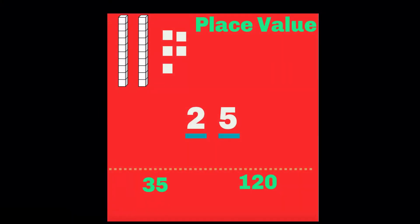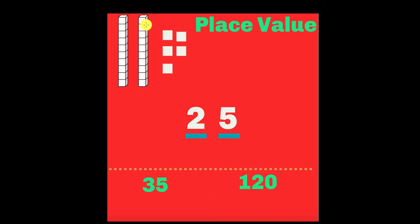Now if you have been watching my other videos you will know that we have already learned about tens and ones. So you know that this is a 10 stick and a 10 stick has 10 cubes or 10 squares in it. And this side is the ones — that's when you have the 10 stick broken down into pieces, and we have the squares individually which makes the ones.